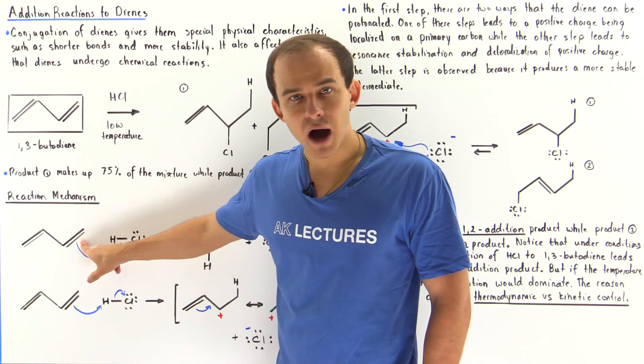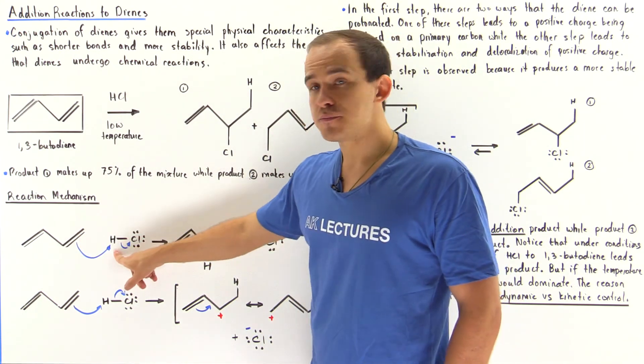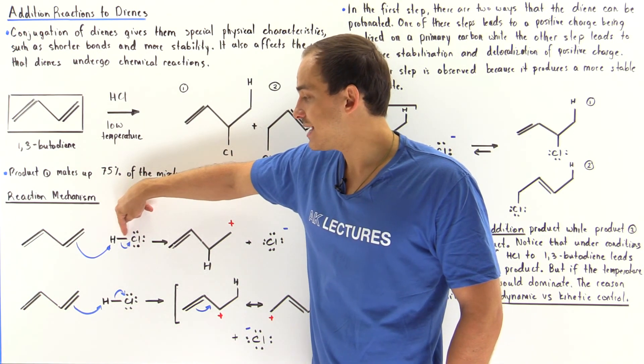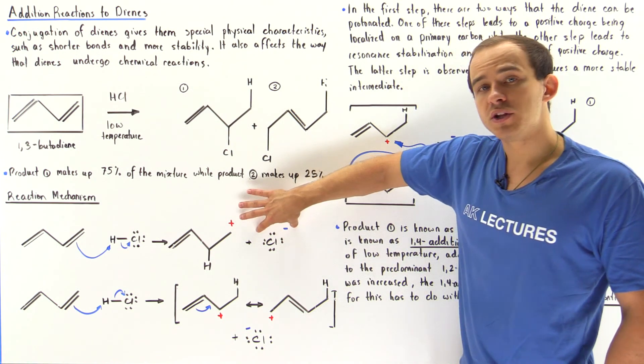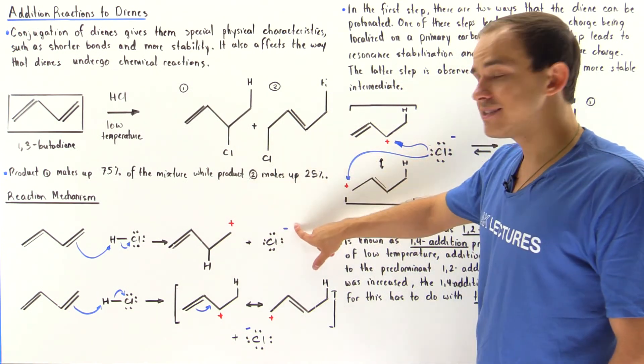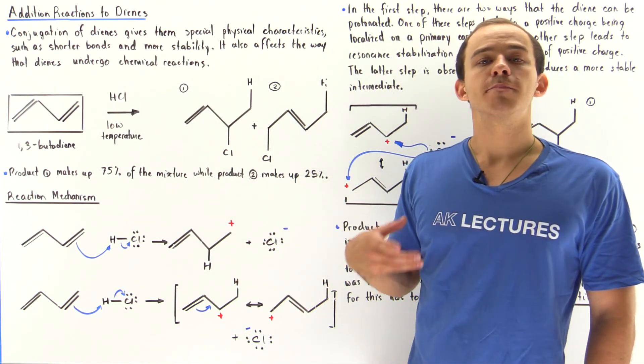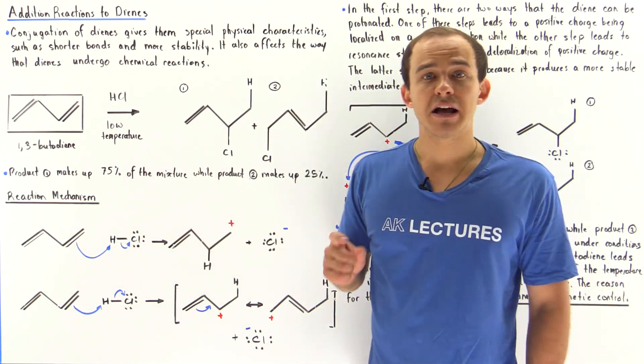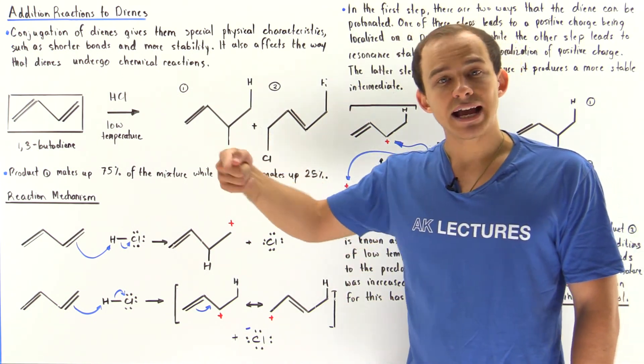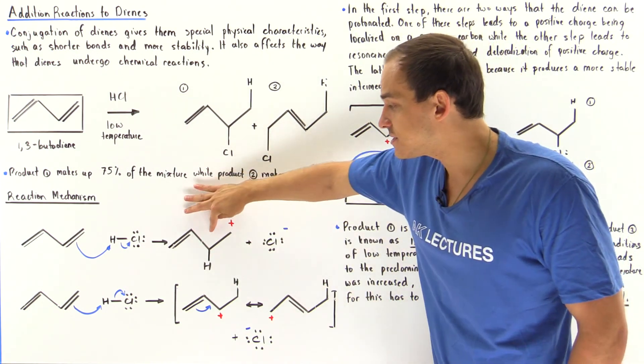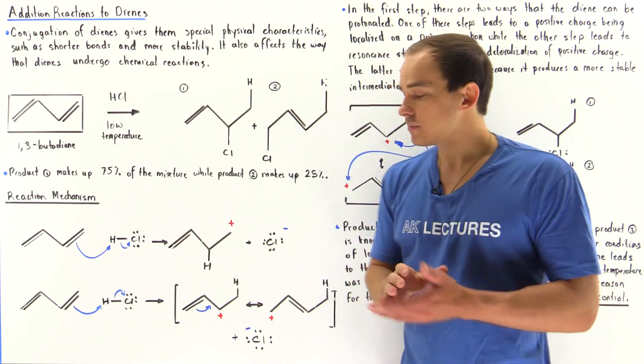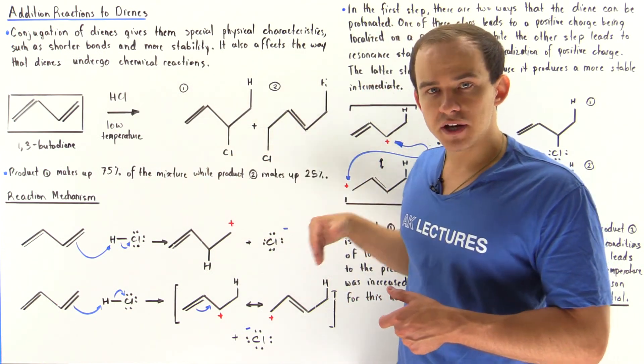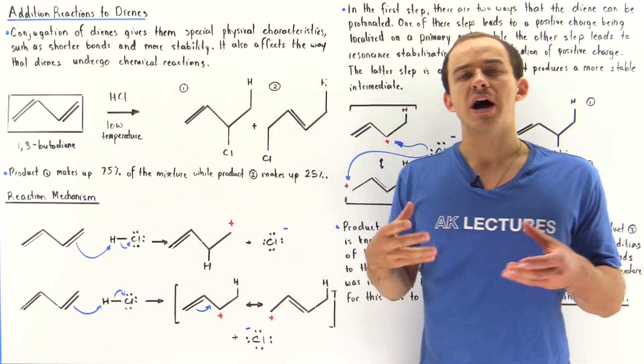In the first protonation step, this pi bond reacts with this molecule. The pi bond takes away the H, displacing our single bond, forming the following chloride atom that has a negative charge as well as this carbocation intermediate. In this possible protonation step, the H atom ends up on the second carbon. In this case, our positive charge is localized onto this first carbon, which happens to be a primary carbon.